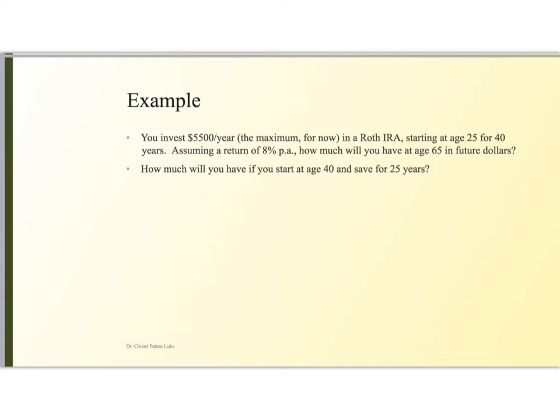Let's look at another example. You're going to very shortly be out of school and having opportunities to invest some of that salary that you'll be bringing in. So, currently, the maximum amount you can invest in a Roth IRA is $5,500 a year. And let's say you start doing this at age 25 for 40 years. If you can achieve an 8% per annum interest rate, how much would you have at age 65 in future dollars?